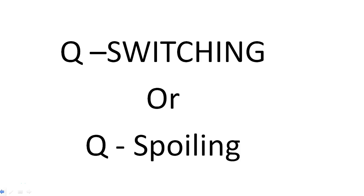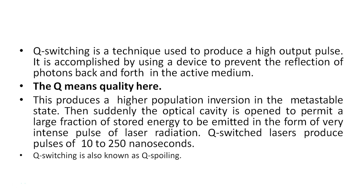Hello friends, today I will discuss the concept of Q-switching or Q-spoiling. Q-switching is a technique used to produce a high output pulse. It is accomplished by using a device to prevent the reflection of photons back and forth in the active medium. This produces a higher population inversion in the metastable state. Then suddenly the optical cavity is opened to permit a large fraction of stored energy to be emitted in the form of a very intense pulse of laser radiation.